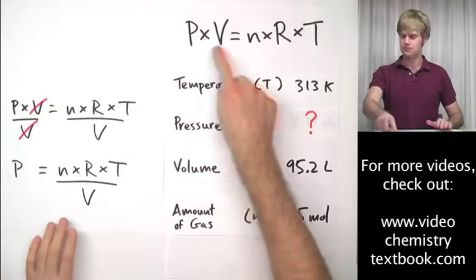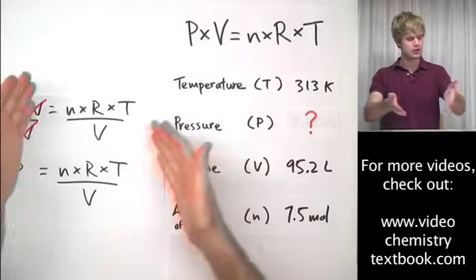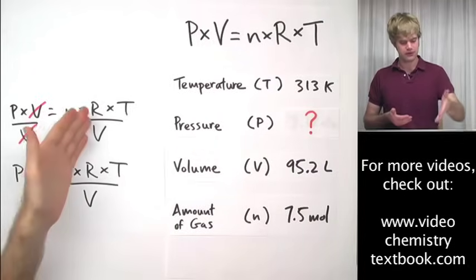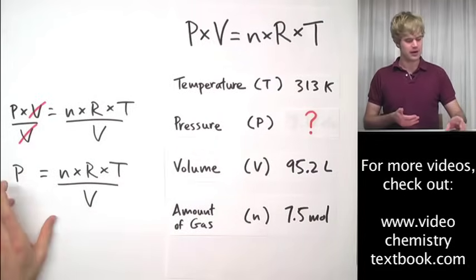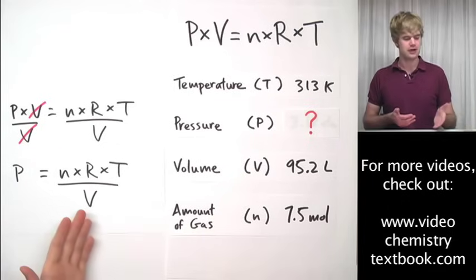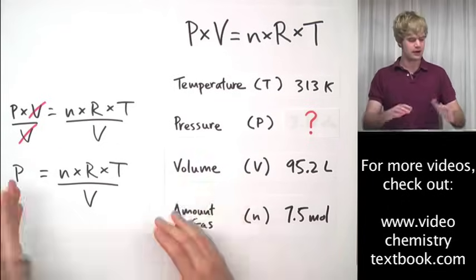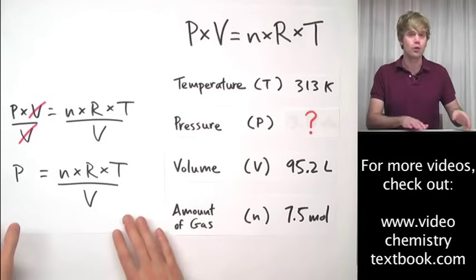We could take the equation PV equals nRT and rearrange it, divide both sides by V, get rid of the V, and then we'd have P equals nRT divided by V. Plug these values in and we could figure out what the pressure was.